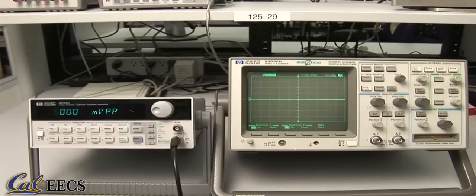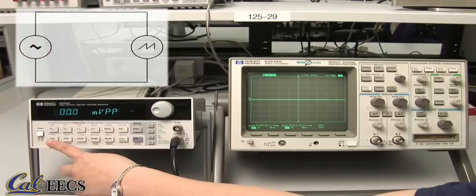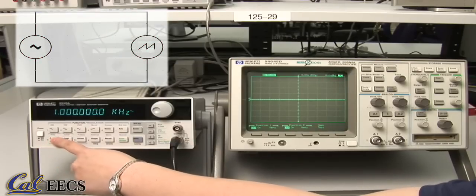Your oscilloscope has two channels for measuring voltages, A1 and A2. To display a waveform on the scope, we will feed the output from the function generator into the oscilloscope, just like in the last video.